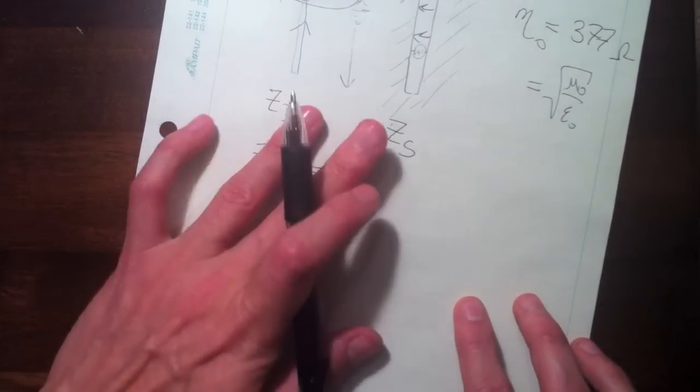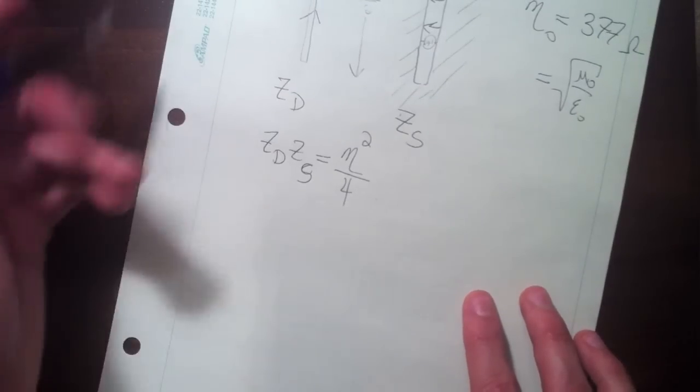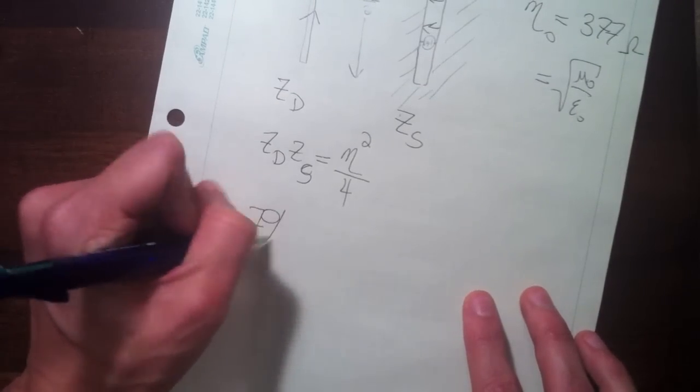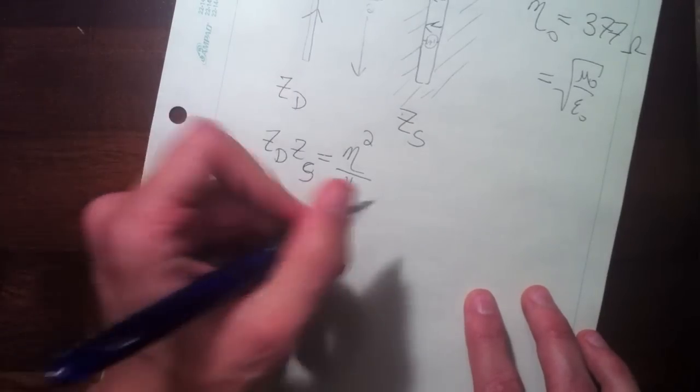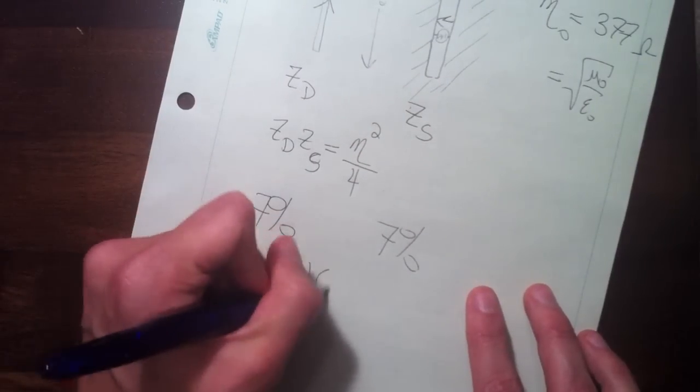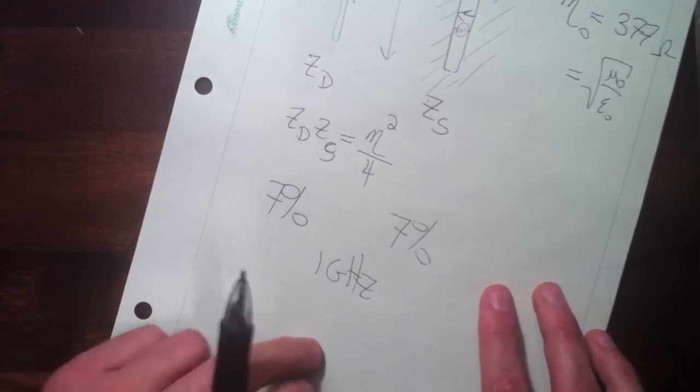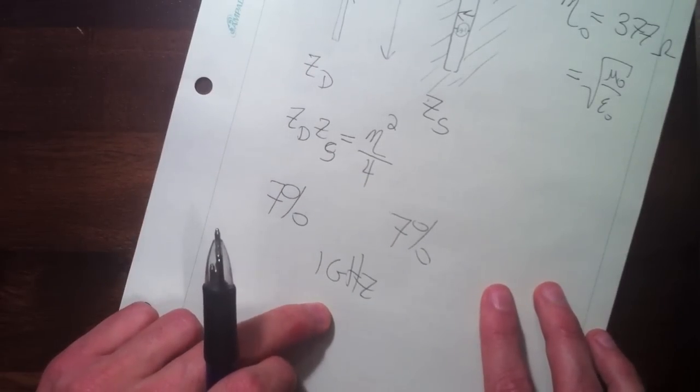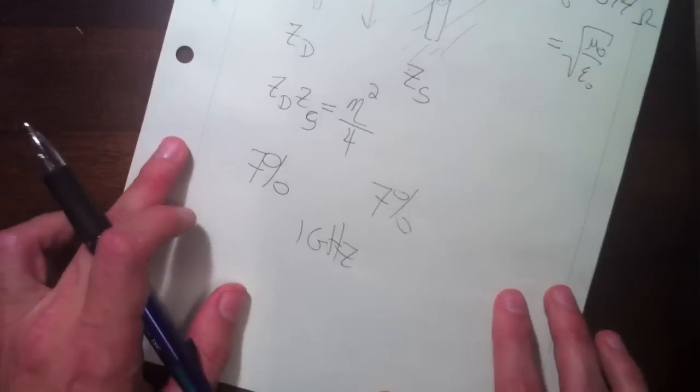The bandwidth of these are fairly similar. For a dipole, it's around seven percent. Same for a slot, which means if you have one gigahertz as your center frequency, you'd be plus or minus three and a half percent around that.